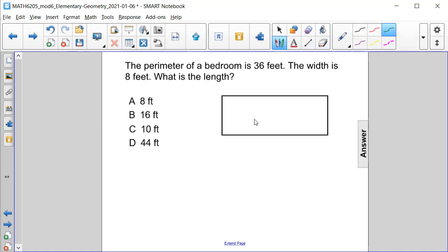We know that this rectangle, which represents a bedroom, has a perimeter of 36 feet. And we know that the width is 8 feet.